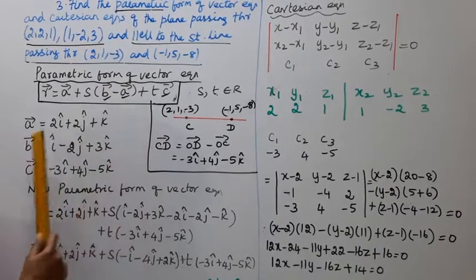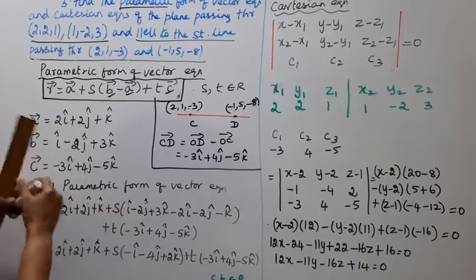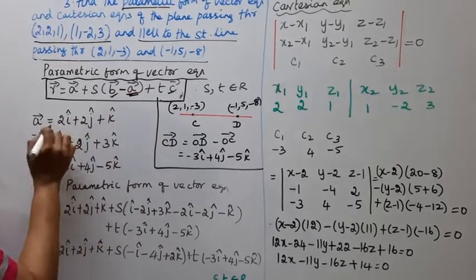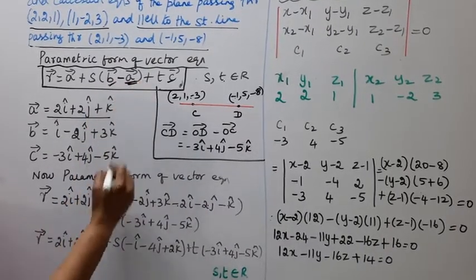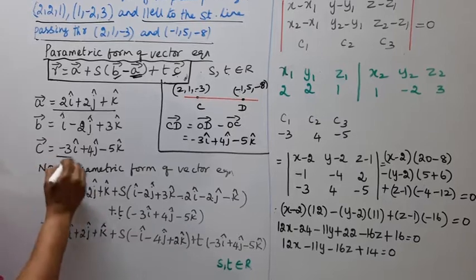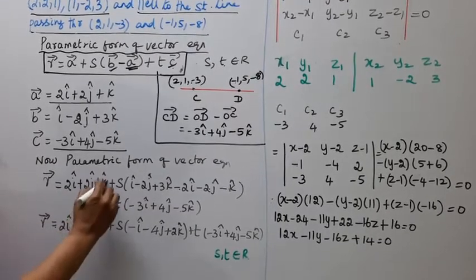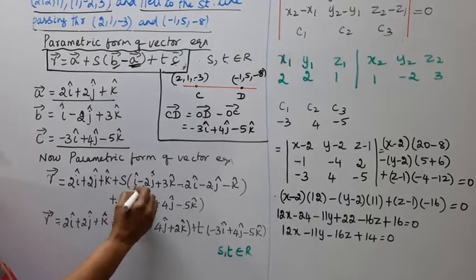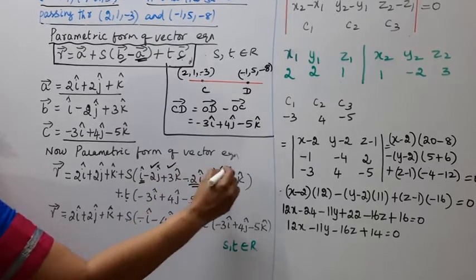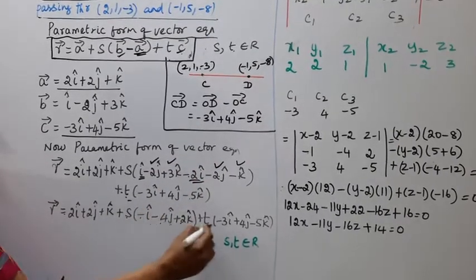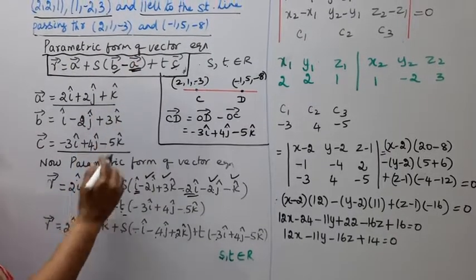R vector equals 2i cap plus 2j cap plus k cap, plus s into (i cap minus 2j cap minus 4j cap plus 2k cap), plus t into minus 3i cap plus 4j cap minus 5k cap, where s and t belong to R. This is the parametric form of the vector equation.